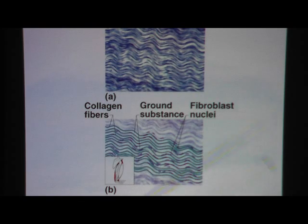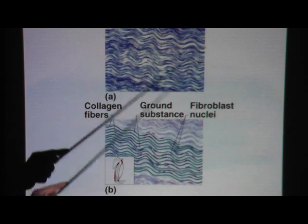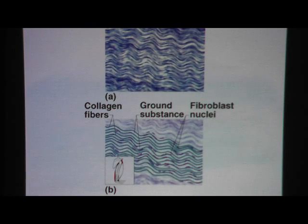Here's a drawing. You see clearly the waviness of the collagen fibers, and then you see in between the collagen fibers are the fibroblasts nuclei. And the ground substance is outside the cells, outside the fiber.